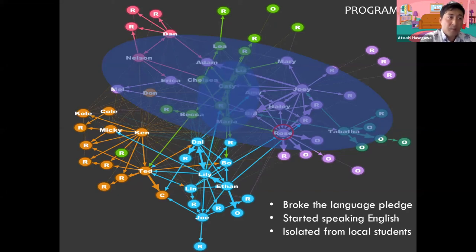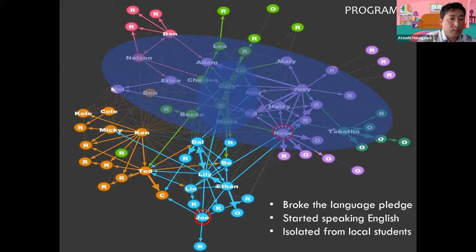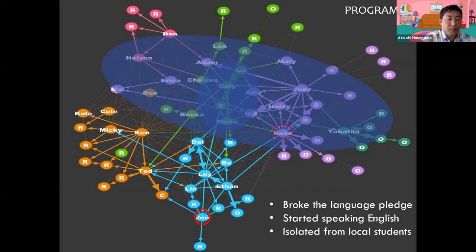Because of her proximity to these initial pledge-breakers and her status in the network, Rose was one of the first people who learned about the pledge breaking, and she initially did not sympathize with them but eventually started using English. As a comparison, some students who were placed more remotely in the network, like Joe, did not get affected or did not know about the pledge breaking until the very end.